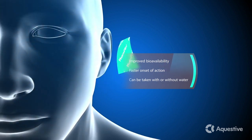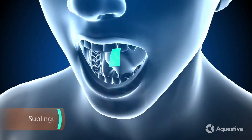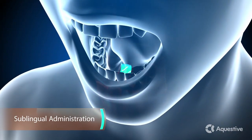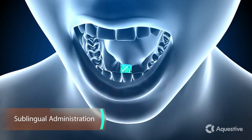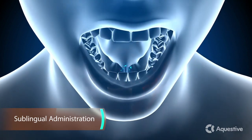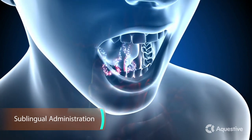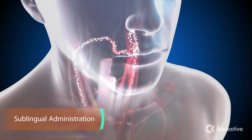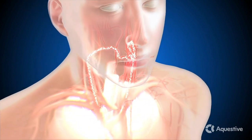Administration methods for FarmFilm include sublingual delivery. When placed under the tongue, FarmFilm dissolves quickly, and due to proprietary permeation enhancing techniques, the drug is absorbed transmucosally directly into the bloodstream.